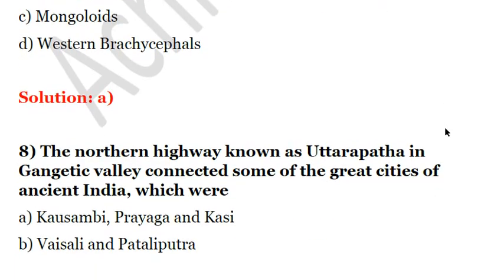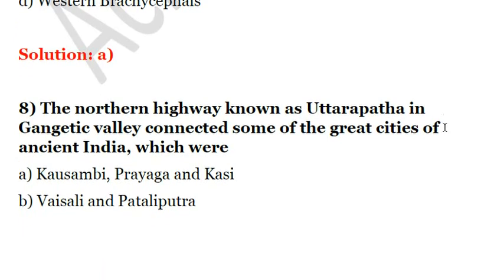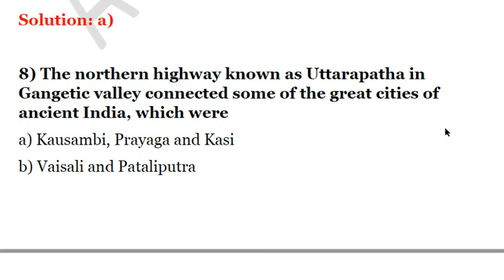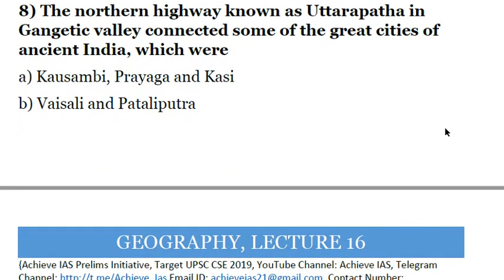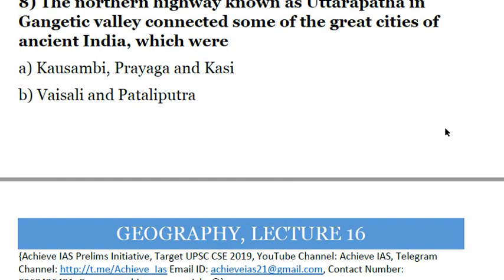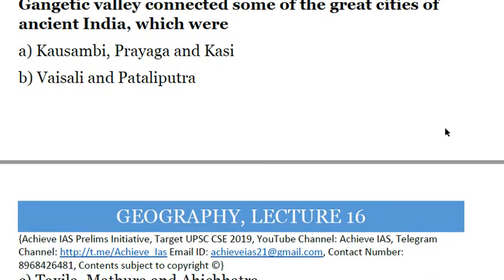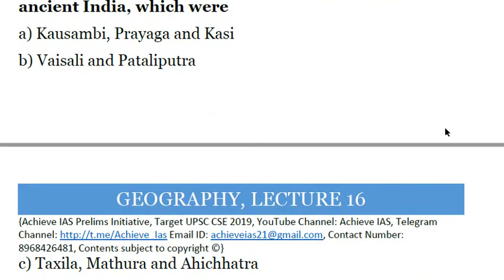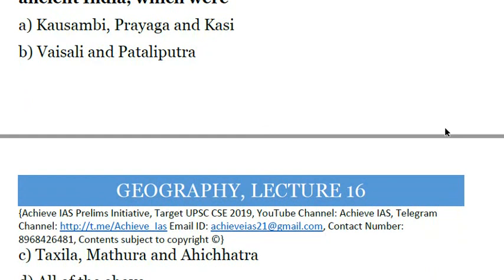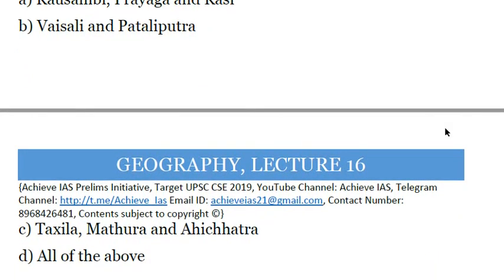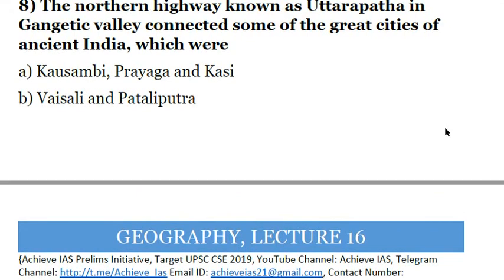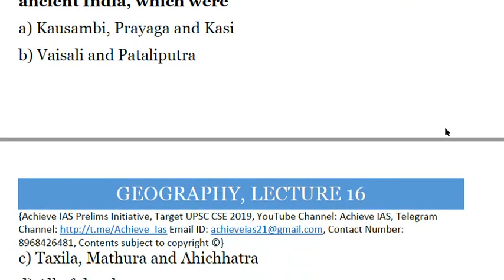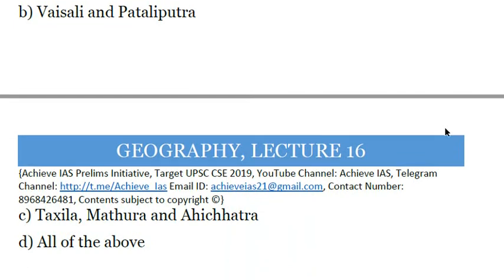Next question: the northern highway known as Uttarapatha, running through the Gangetic Valley, connected some of the great cities of ancient India. Which of the following cities did Uttarapatha connect? A, Kushambhi, Prayag, and Kashi. B, Vaishali and Pataliputra. C, Takshila, Mathura, and Ahichhatra. D, All of the above. Uttarapatha was a highway that connected all of these cities, so the answer is D — all of the above.